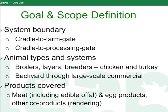Looking at the goal and scope definition, we have recommended two system boundary choices: cradle-to-farm gate or cradle-to-processing gate. The animals and systems that we have tried to cover in this guidance are broilers, layers, and breeders, and the species chicken and turkey only. We recognize that there are other poultry species, particularly duck in Asia, which are quite important, but there are no specific guidelines given in our document for those. We have also attempted to keep enough flexibility so that the guidelines can be applied from backyard multi-animal species systems through large-scale commercial operations.